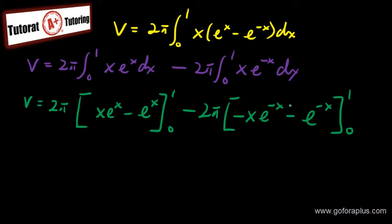So if I have something like this, how would I evaluate these integrals? I just need to plug in 1 and 0. And if you plug in 1 and 0, you figure out that this is going to be 4 pi over e. This is my volume here.